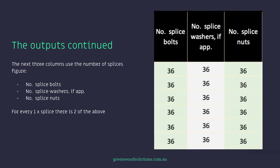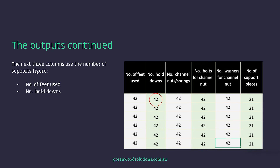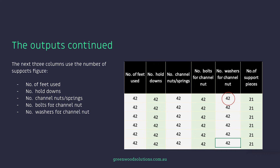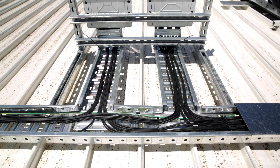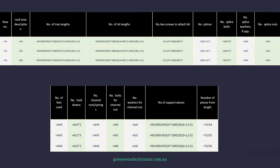The next three columns use the number of splices figure: the number of splice bolts, number of splice washers if applicable, and the number of splice nuts. The following three columns use the number of supports figure: number of feet used, number of hold-downs, number of channel nut springs, number of bolts for the channel nuts, and number of washers for the channel nuts. These all relate to the number of structural supports under the tray — in this case we are using Uni-strut. This slide gives you a breakdown of the formulas used, so spend your time having a look at those.